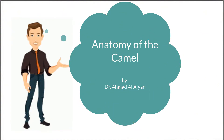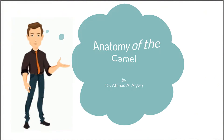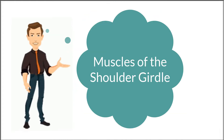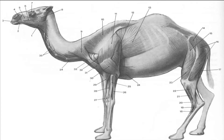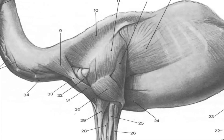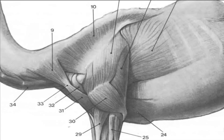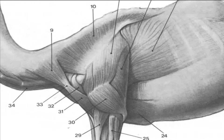This is Ahmad and welcome to another anatomy tutorial where right now I'm going to be talking about the muscles of the shoulder girdle in the camel. In this tutorial we will cover the muscles which are responsible to join the forelimb to the trunk and are responsible for coordinating the movement of the forelimb, trunk, head and neck, as you can see in this picture.